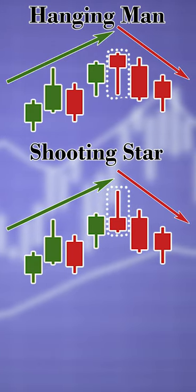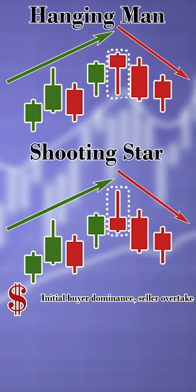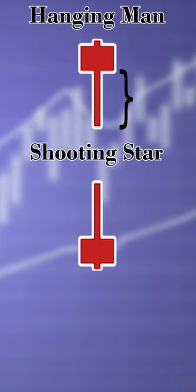They mark the beginning of a downward shift. This means sellers are overwhelming the buyers and the share's price is decreasing. Similarly to their bullish equivalents, the hanging man has a long lower shadow while the shooting star bears a long upper shadow.